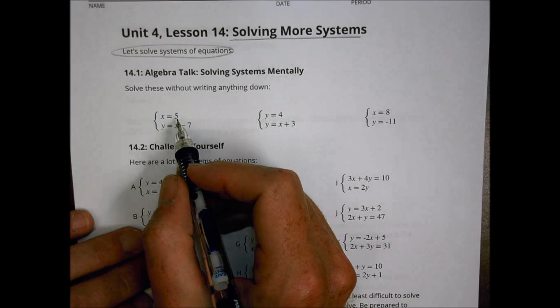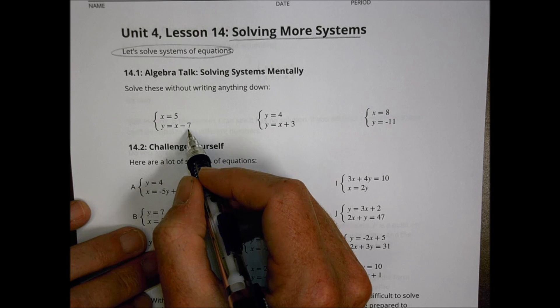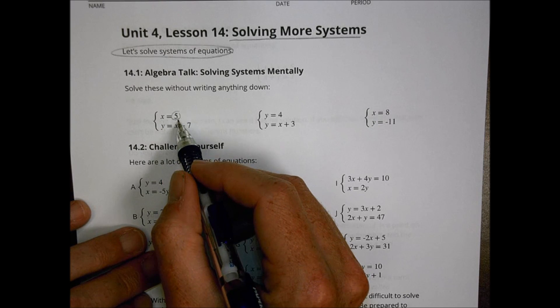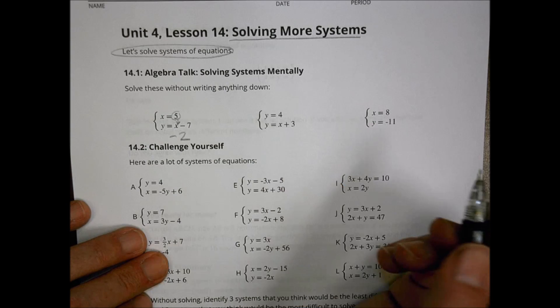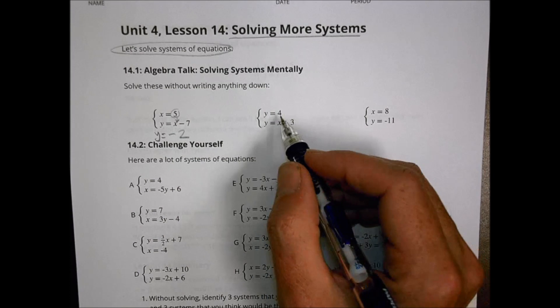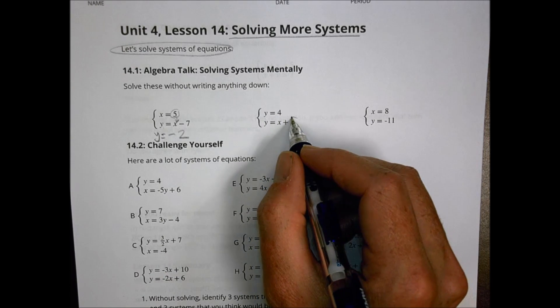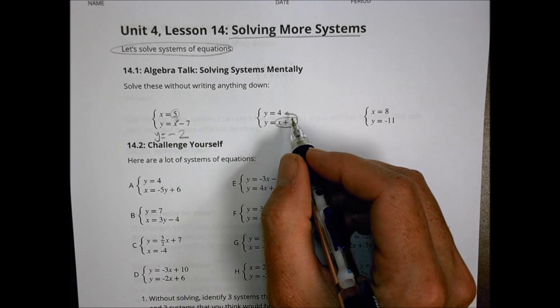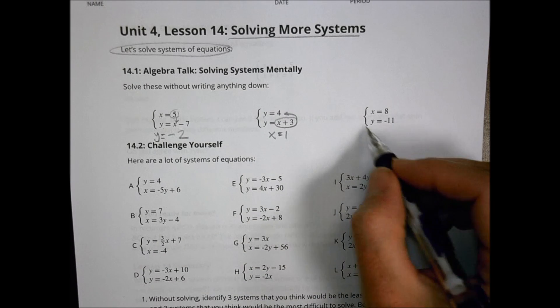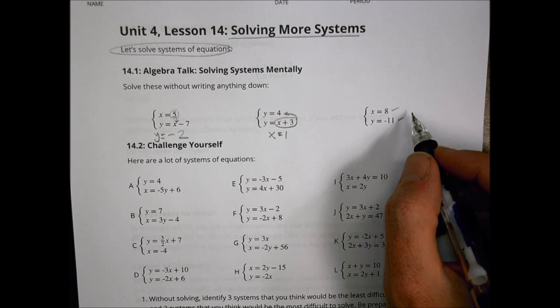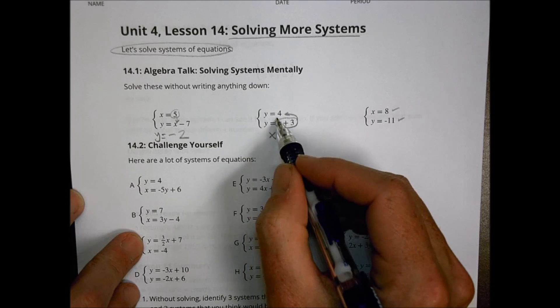So here we go. First of all, it says solve these equations without writing anything down. We can look real quick and say, for example, here x is 5 and y equals x minus 7. If we were to take this right here, 5, and substitute it in the place of x, we get 5 minus 7, and that becomes minus 2 for what y would equal there. We can look and do some substitution and recognize some patterns in the structure of these equations to help us solve for x and y.